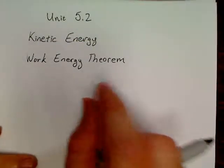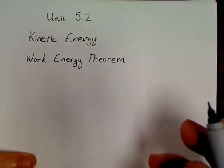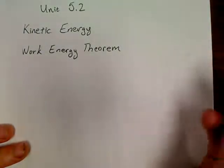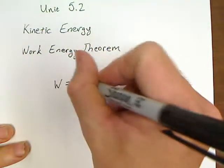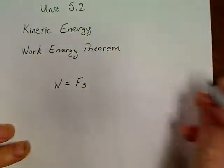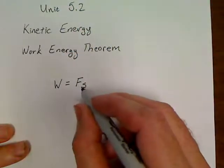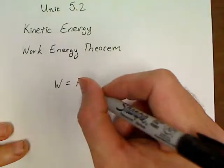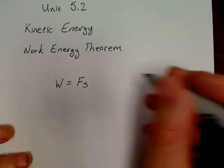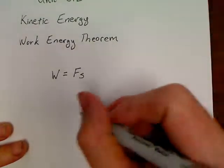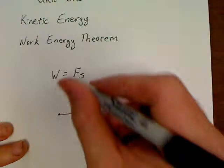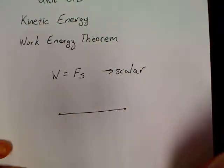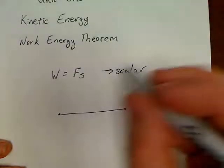Now, the last video that we did, Unit 5.1, is where we first talked about what is work. And so we addressed in order to do work, work is equal to a force times some distance. That's all work is, a force, but there has to actually be some distance. Now, the cool thing about work is, unlike vector-type quantities, work is a scalar quantity. That means there is no direction involved in work.